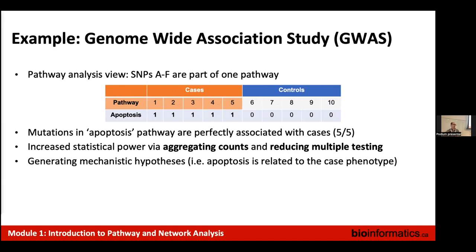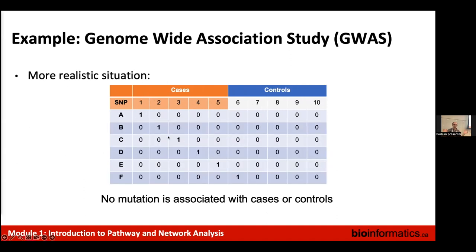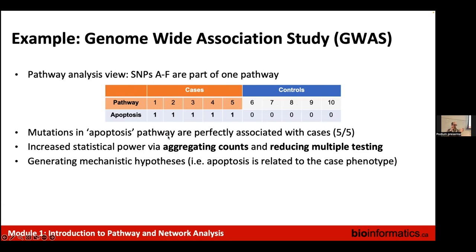However, if we map those genes to pathways — say all the identified SNPs are part of the apoptosis pathway — we can collapse all those individual measurements into a perfect pattern again. We rewrite the table looking at pathways instead of individual SNPs, asking whether there's a SNP in a given pathway in cases versus controls, and we recover the signal. The increased statistical power comes from aggregating counts: we take all these counts that were spread out, merge them together, and now see a strong relationship.